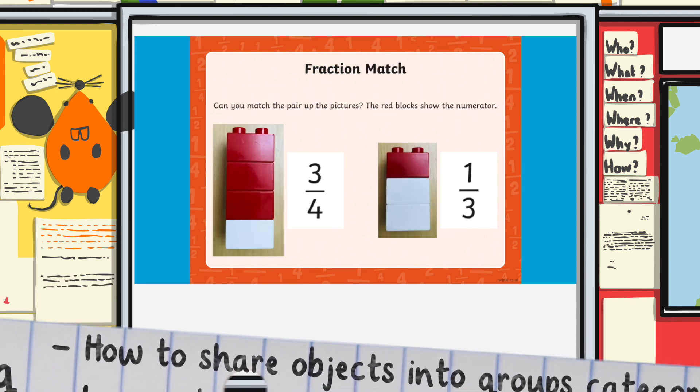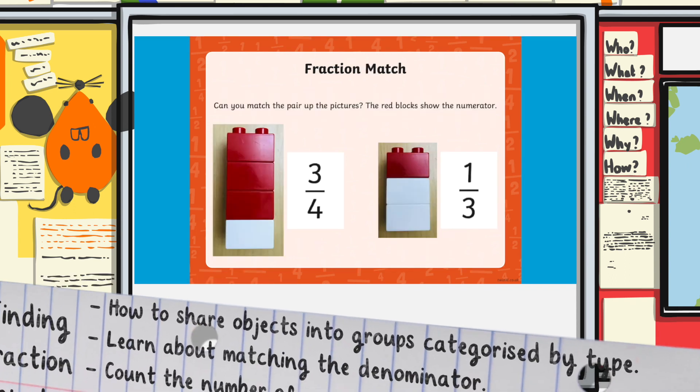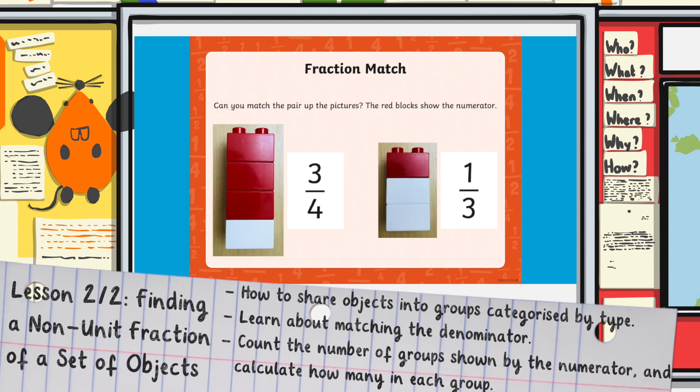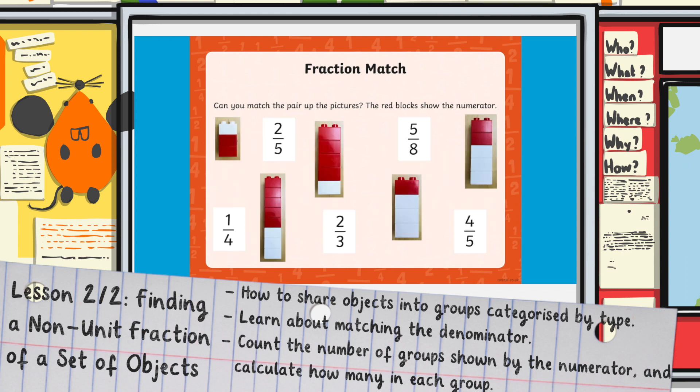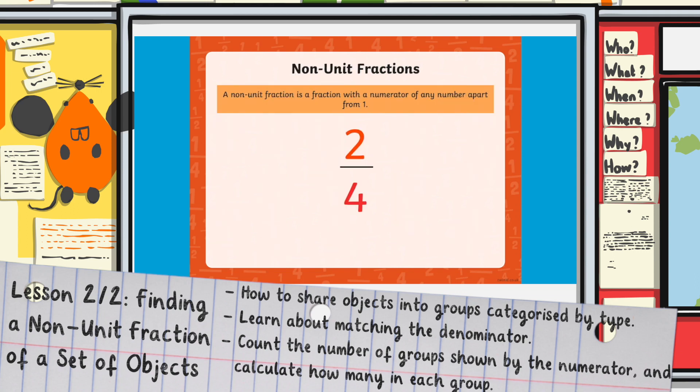It is always the red block that we need to know for our numerator. So, now you understand that, are you ready to match our fractions? The numerator and denominator still show us the same thing, just that you have more than one equal part.